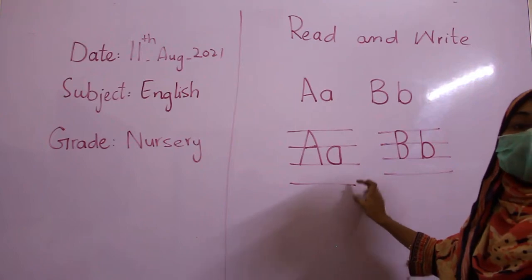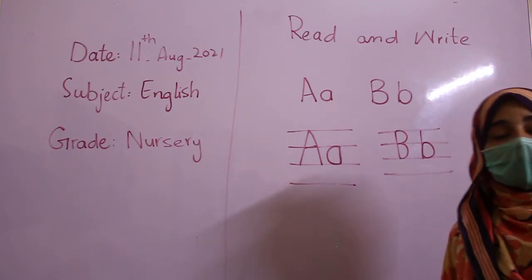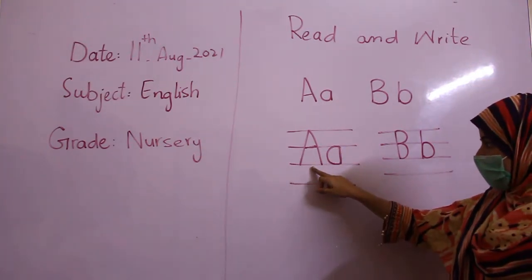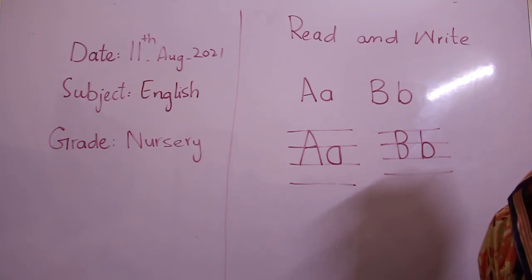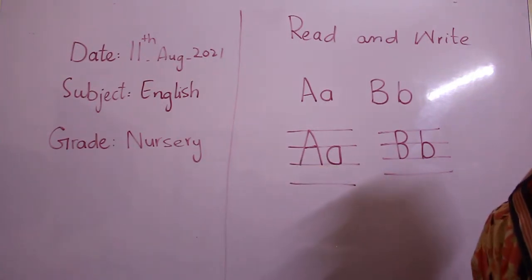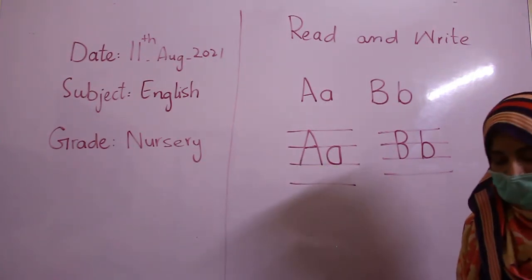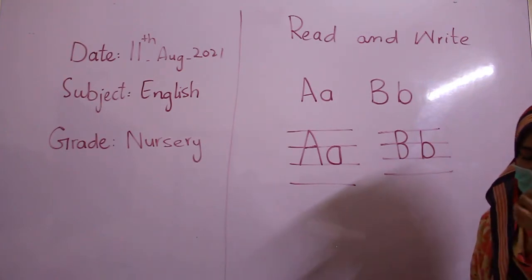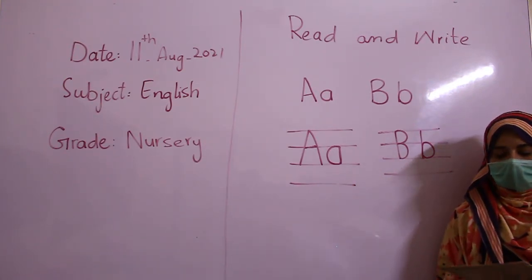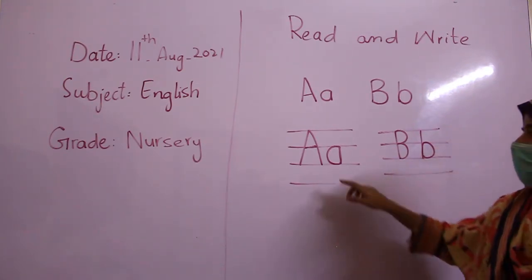We use two lines to write capital A. We read A. A is the small letter with the sound A. Apple, aeroplane — A.